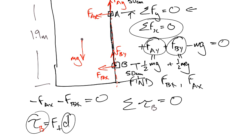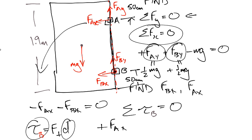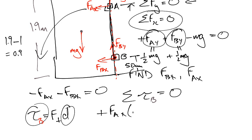So, let's do FAx first. Starting at this point, FAx is definitely perpendicular, and it does produce a rotating motion about point B, and that rotation is counterclockwise, so it's positive. The force is FAx, and the distance is, well, that's simply 1.9 minus 0.5 and 0.5, which is 1.9 minus 1, which is 0.9. So, we can multiply that by 0.9 meters, and that is the torque for FAx about point B. Now, we're not finished. We still have one more force to do, and that's MG.